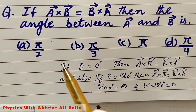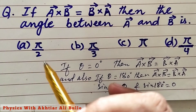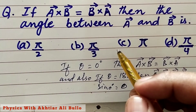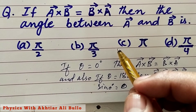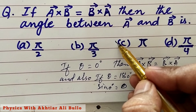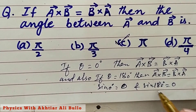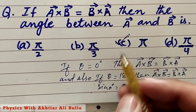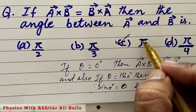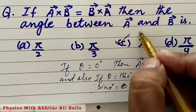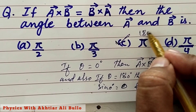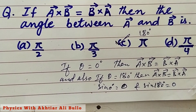So here the correct option will be C, pi, because 180 degrees is equal to pi.